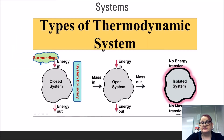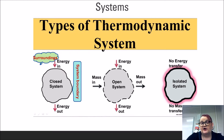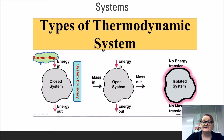Now that we understand the components of a system, we can understand how different types of systems exist and interact with one another and their environment. We characterize systems in one of three ways based on how they interact with energy and matter. Isolated systems do not exchange anything with their surrounding environment — neither energy nor matter can enter or leave. In environmental science, we typically do not deal with isolated systems. Closed systems allow energy in and out, however matter does not move into or out of the system. Open systems, the most common in the natural world, allow both energy and matter to move freely in and out.